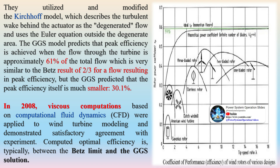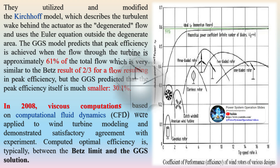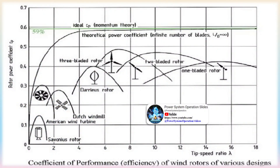In 1934, H. Glauert derived the expression for turbine efficiency when the angular component of velocity is taken into account, by applying an energy balance across the rotor plane. Due to the Glauert model, efficiency is below the Betz limit, and asymptotically approaches this limit when the tip speed ratio goes to infinity.